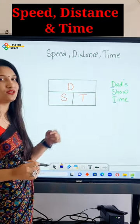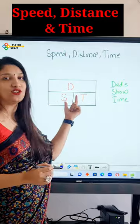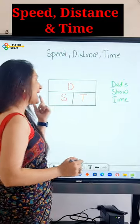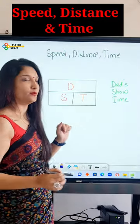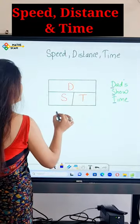You write D on the top, and S and T on the bottom.